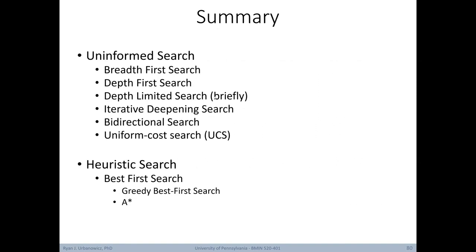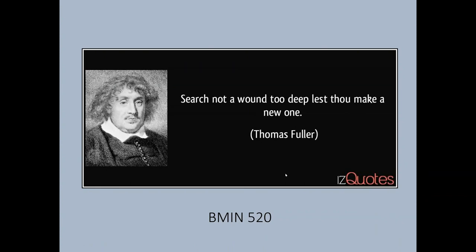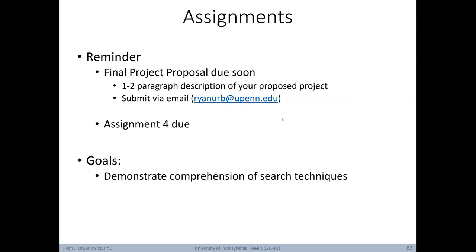In today's lecture we've covered a variety of search algorithms: uninformed search methods including BFS, DFS, depth-limited search, iterative deepening search, bidirectional search, and uniform cost search. We also got an introduction to heuristic search and covered two best-first search algorithms — greedy best-first search and the A-star algorithm. A reminder that the final project proposal will be due soon and to get started on assignment four. Check the syllabus for specific due dates. Thank you for your attention, and I'll see you in the next lecture.